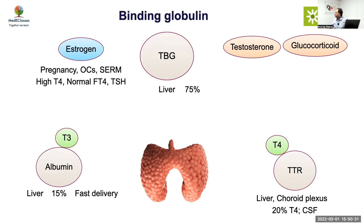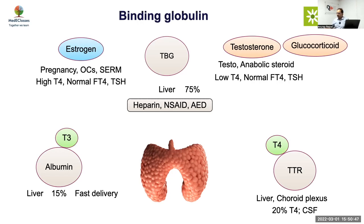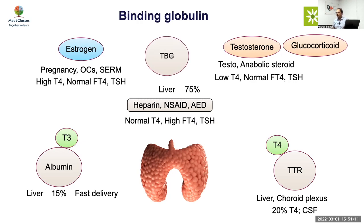Testosterone and glucocorticoids will decrease TBG. So if somebody is on testosterone or anabolic steroids, total T4 will be falsely low, free T4 will be normal, and TSH will be normal. There are certain drugs like heparin, NSAIDs, and some anti-epileptic drugs which disrupt the binding of thyroxine with the binding globulin. If you are given heparin, or a sample is heparinized, that will have the same effect.